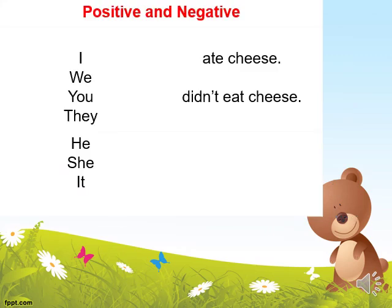How do we form the past simple tense? We use the second conjugation. For example: I ate cheese, we ate cheese, you ate, they ate. For the negative form: he didn't eat, she didn't eat, they didn't eat. In the past simple, there is only one form used with all personal pronouns — I, we, they, you — and for negatives we use didn't.